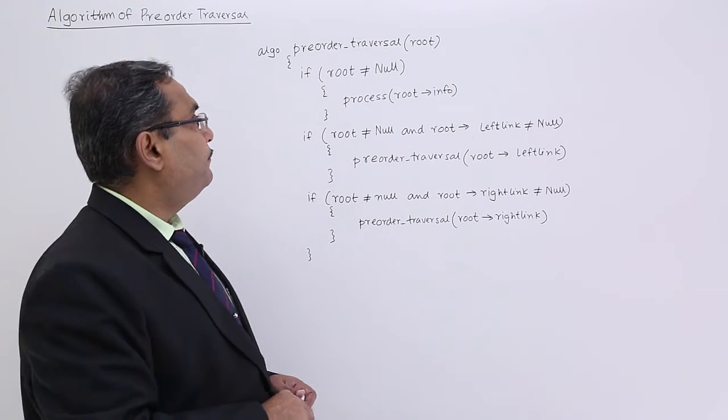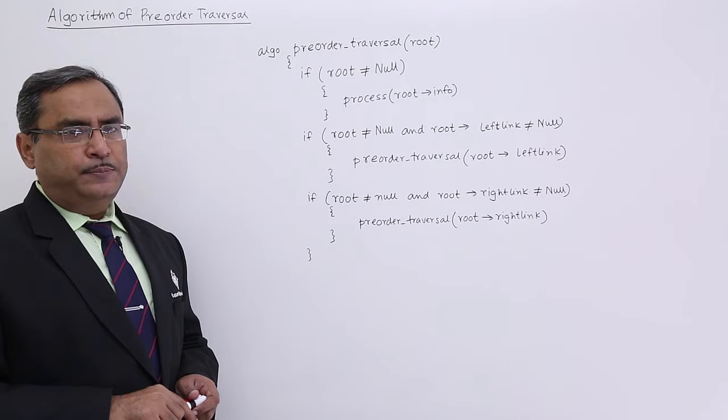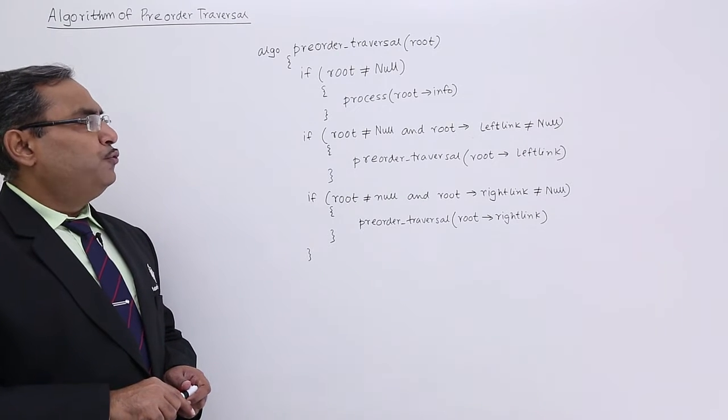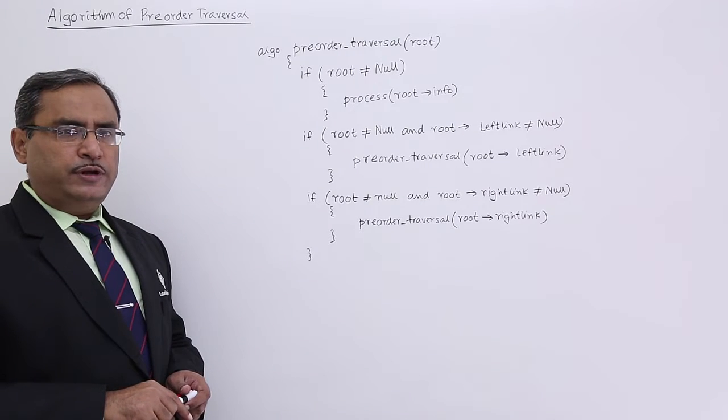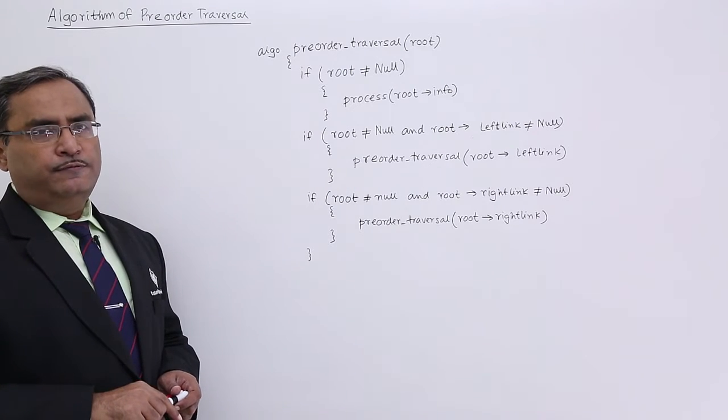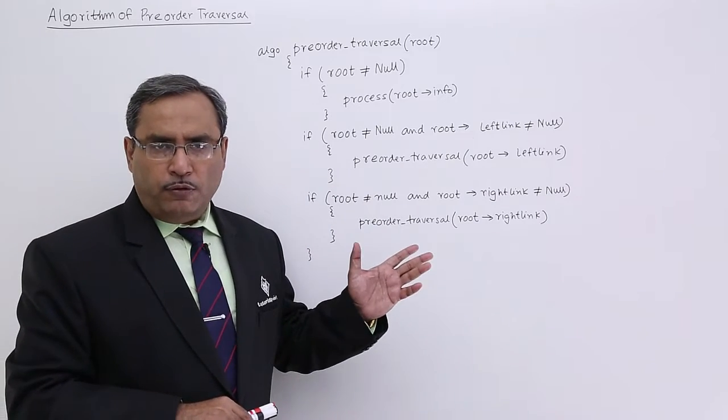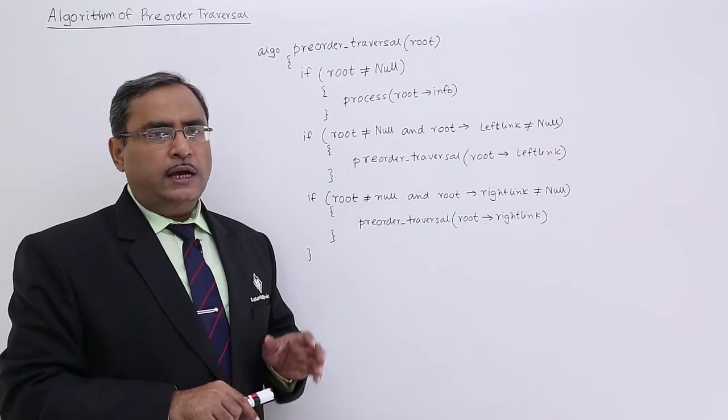So here is the algorithm: Algorithm pre-order traversal, passing root as input parameter. If root is not equal to null, that means if the tree exists, then process root implies info. Process means you can print this root implies info; you can do some other activities, whatever it is.